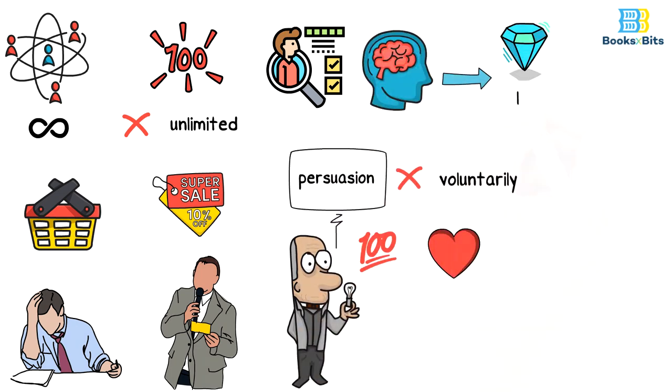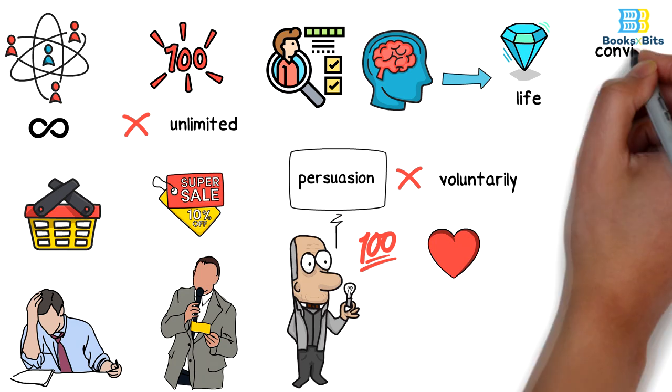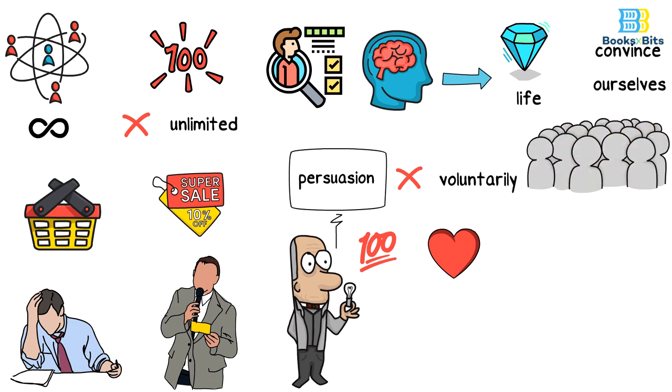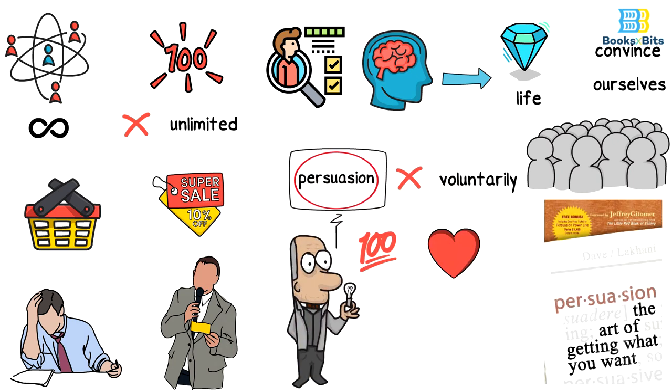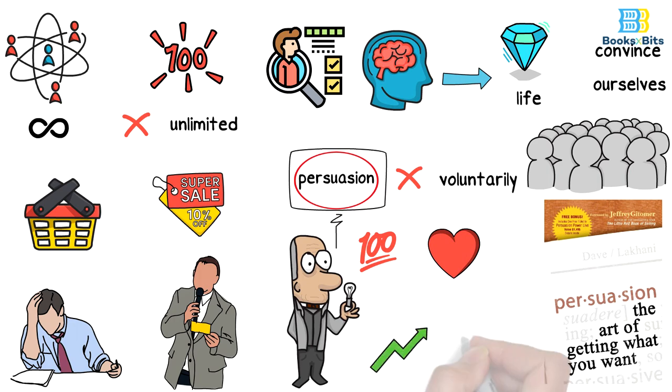Persuasion is the essence of life, as it helps us in knowing the extent of our ability to convince ourselves and others. Therefore, the book Persuasion comes to explain the importance of persuasion in this life and helps in developing this skill in order to get what you want.